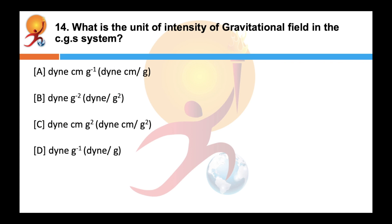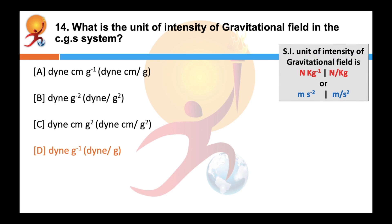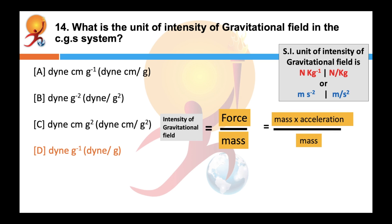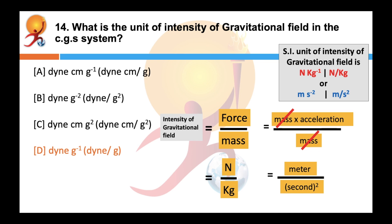What is the unit of intensity of gravitational field in the CGS system? Correct answer is D. The SI unit of intensity of gravitational field is Newton per kg, so the CGS unit is dyne per gram. It is also represented by meter per second square. Gravitational field intensity is the force on a unit mass at a point in the field. Since force equals mass times acceleration, it can be written as Newton per kg, or after cancellation, simply as acceleration in meter per second square.